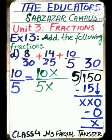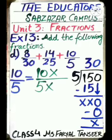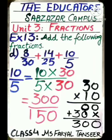The third fraction is 10/5. The denominator is 5. To make it equal to 150, I divide 150 by 5, which gives 30. So I multiply both 10 and 5 by 30: 30×10=300 and 5×30=150, giving 300/150.